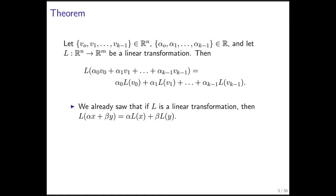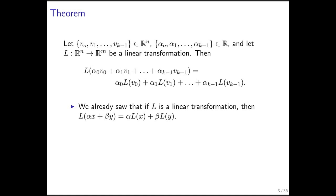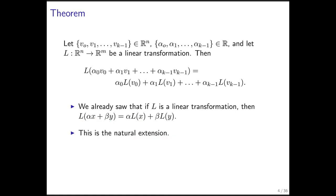We've already seen this when we start with two vectors and two scalars. If we take a linear combination of two vectors using two scalars and then transform, we get the same result as if we first transform those vectors and then take the linear combination. This particular theorem is a natural extension of that.